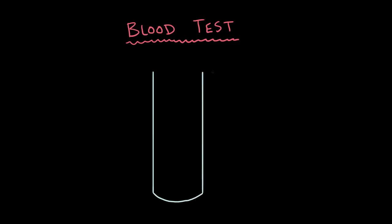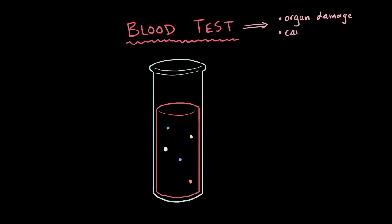These are diagnostic tests where we take a sample of blood and look at what's floating around. Depending on what's there, we can start to try and understand the extent that an organ's been damaged by hypertension or to help us pinpoint the cause of secondary hypertension.